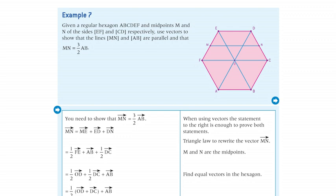In order to prove the statement from the example, you need to show that the vector MN equals 3 divided by 2 multiplied by the vector AB.